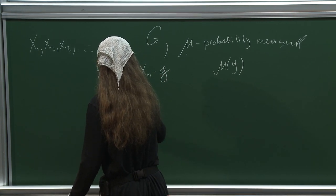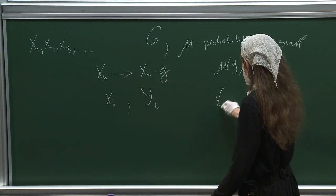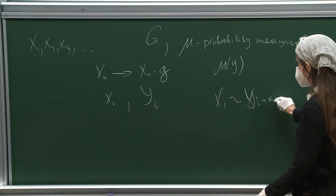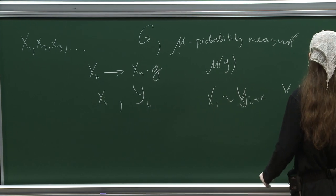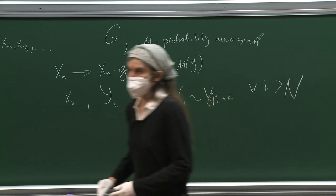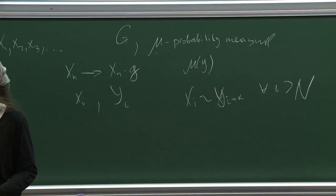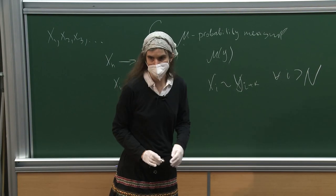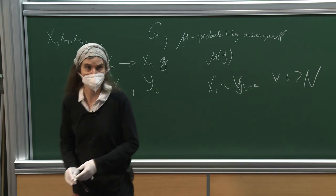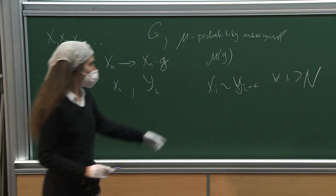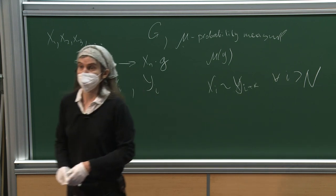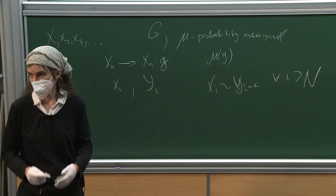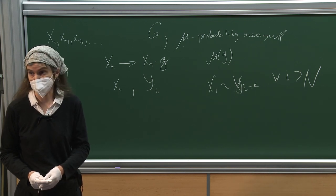At time n we stay at position x_n in our group and we go to x_n times g, where g is chosen with probability mu of g. We define the boundary as follows: when we have two trajectories x_i and y_i, we say they are equivalent if x_i equals y_{i+k} for any i greater than some constant n. So trajectories are equivalent if up to a time shift they coincide after some time instant.